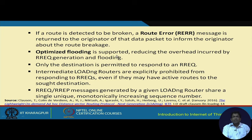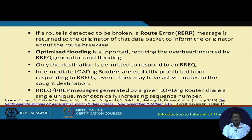Optimized routing is supported in LOAD-ng, reducing overhead from route request generation. Only the destination is permitted to respond to the route request; intermediate routers are explicitly prohibited from responding, even if they have been active in generating routes. The route request and route reply messages share a single unique monotonically increasing sequence number.